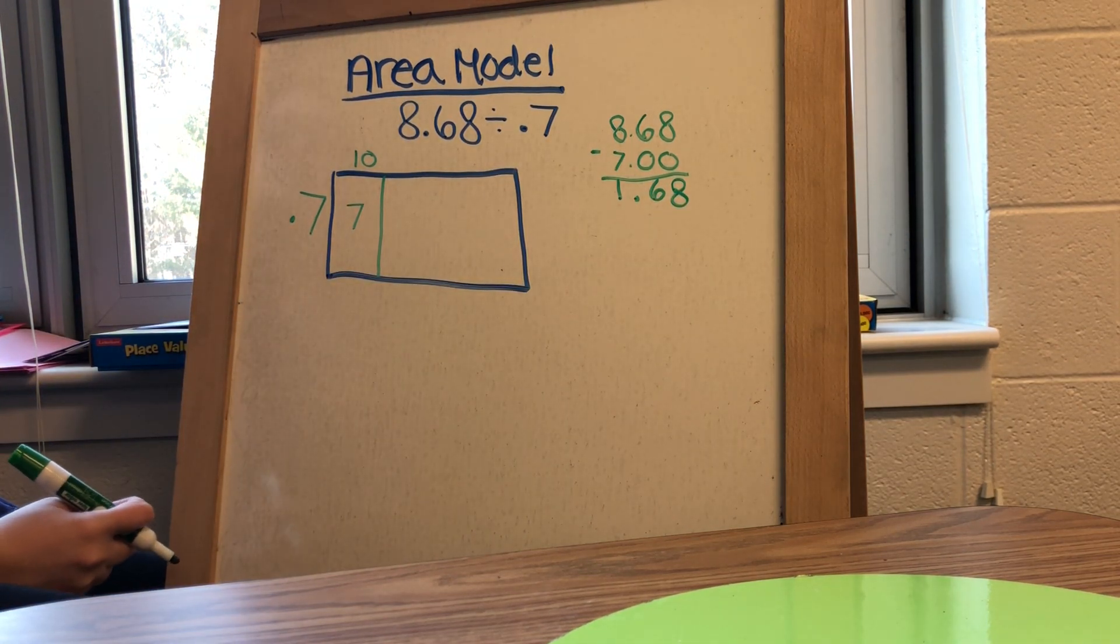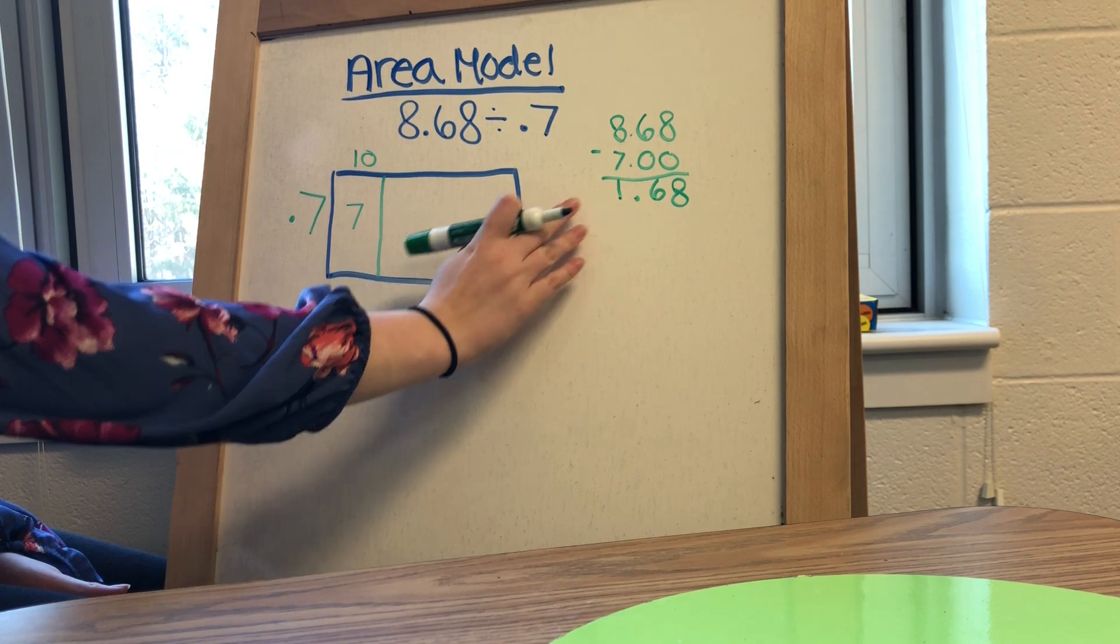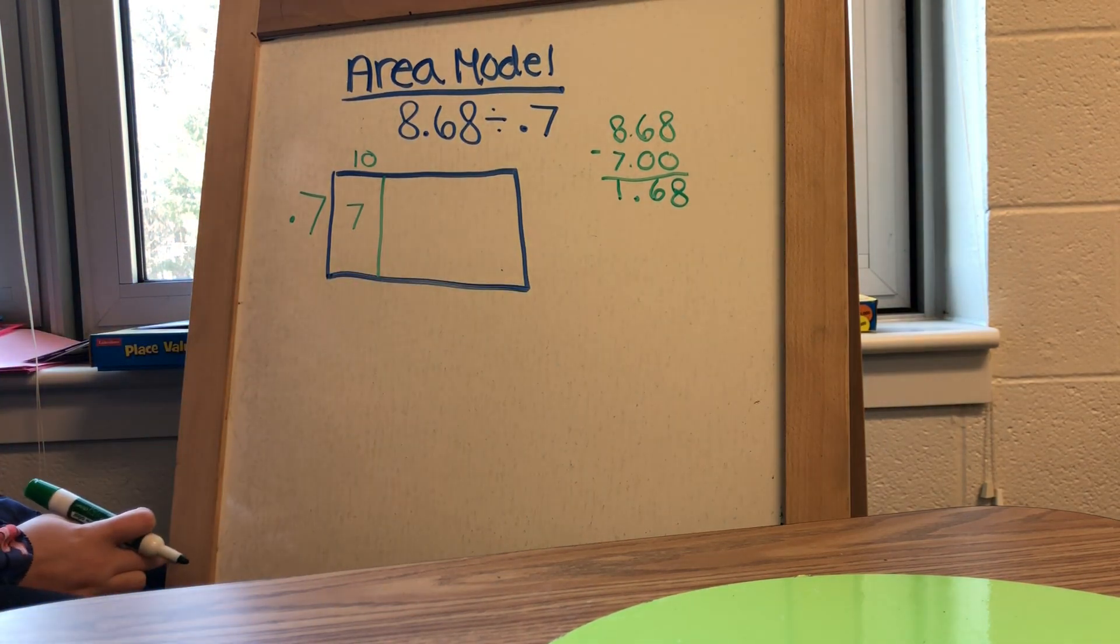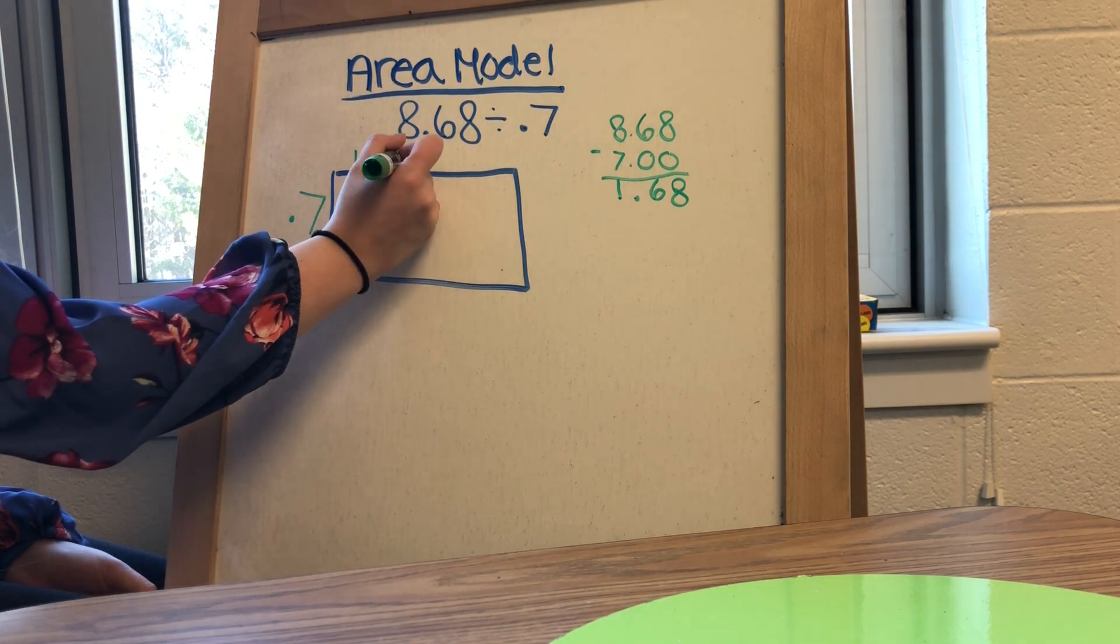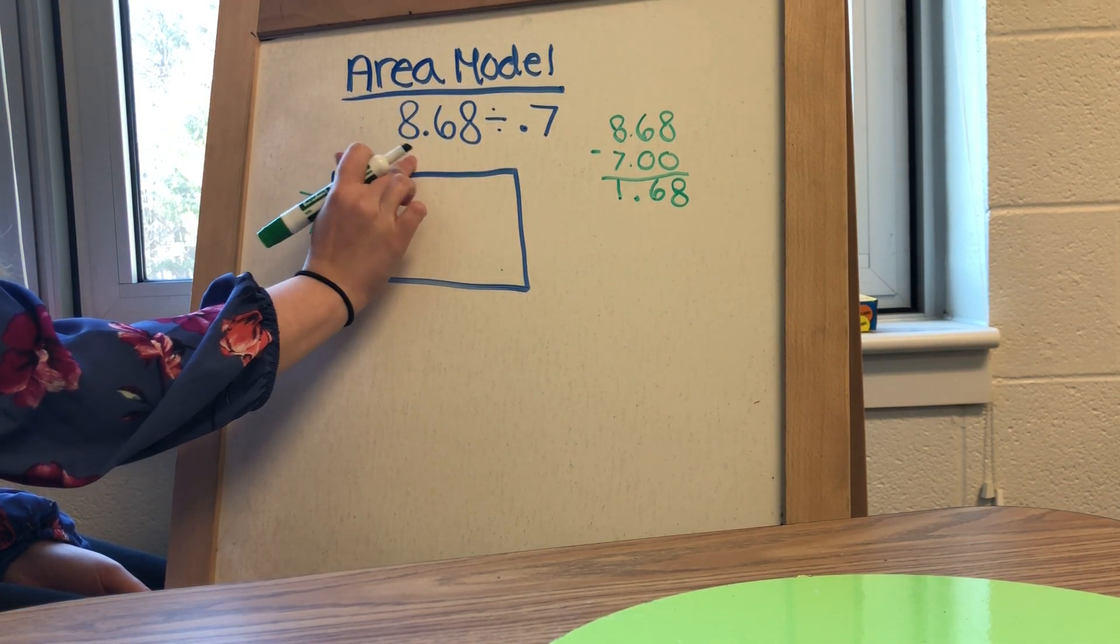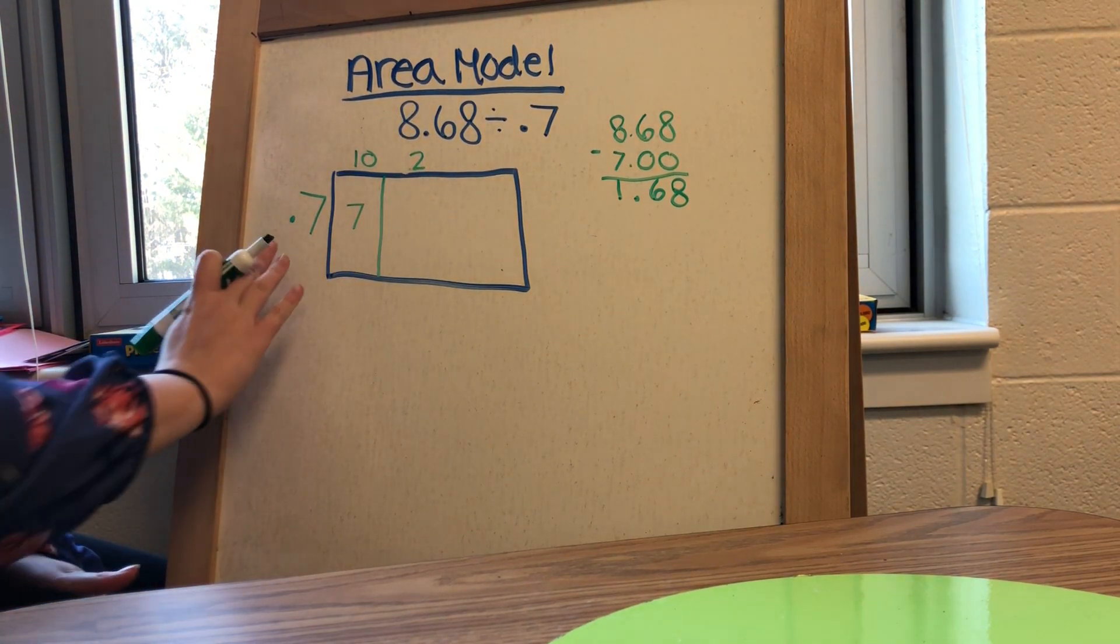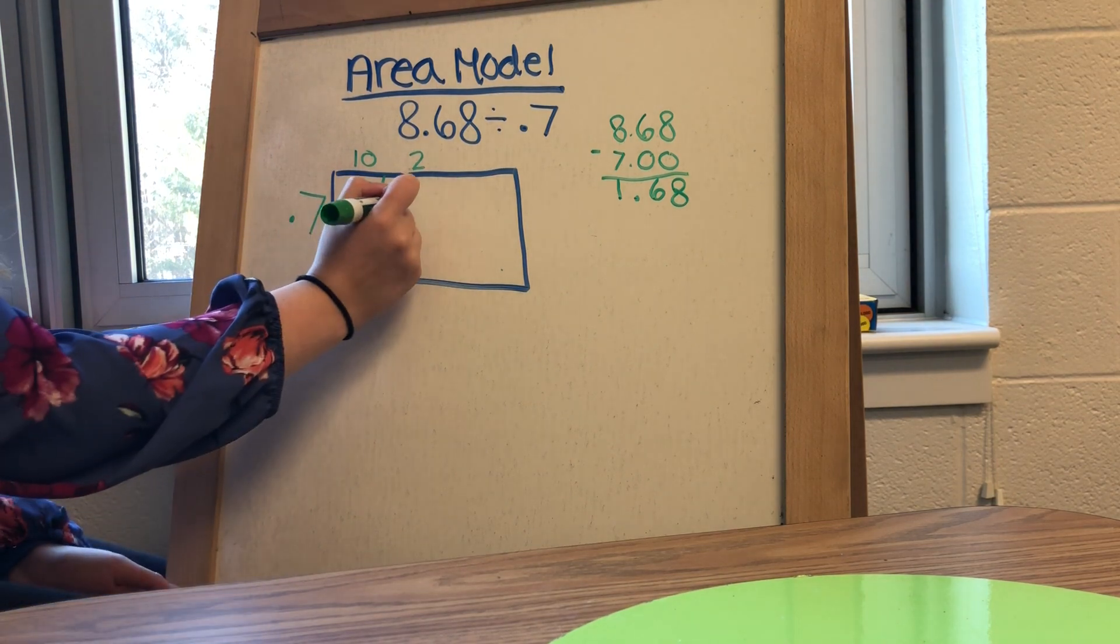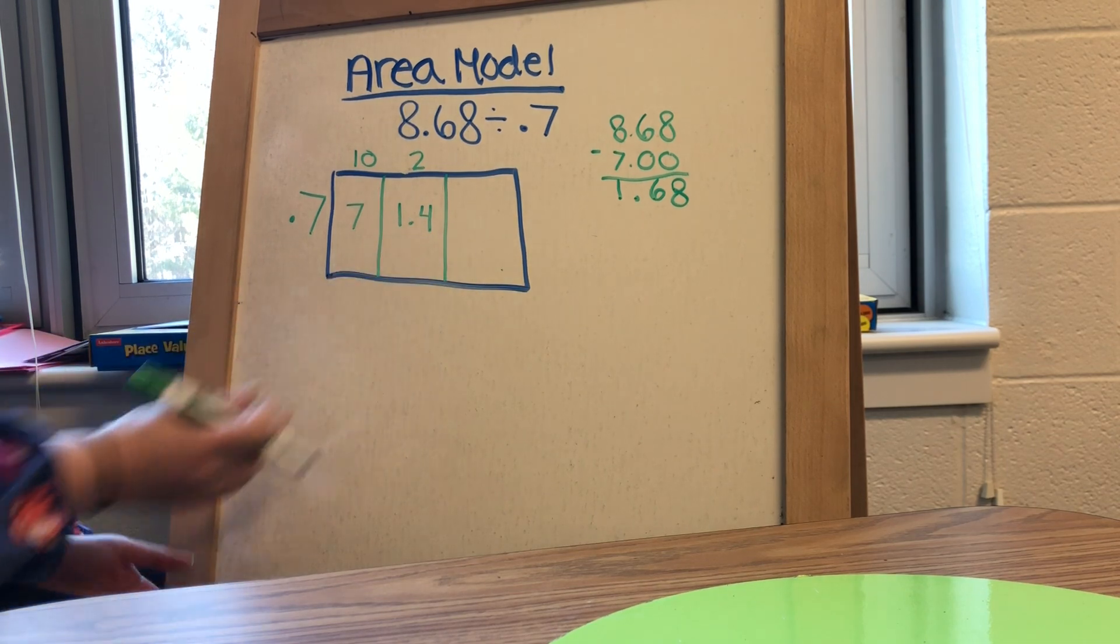So from here, students will think about numbers that would make sense. If I did 10 again, I would get another 7 wholes, and I can't subtract 7 wholes away from 1 and 68 hundredths. So I know that I need to use a number much smaller. So they might say, okay, well if I just multiply it by 1, that's 7 tenths. Or they might recognize that they could do 2 of those so that they could multiply it by 2 wholes. So 7 tenths times 2 wholes is going to be 1.4, or 1 and 4 tenths.